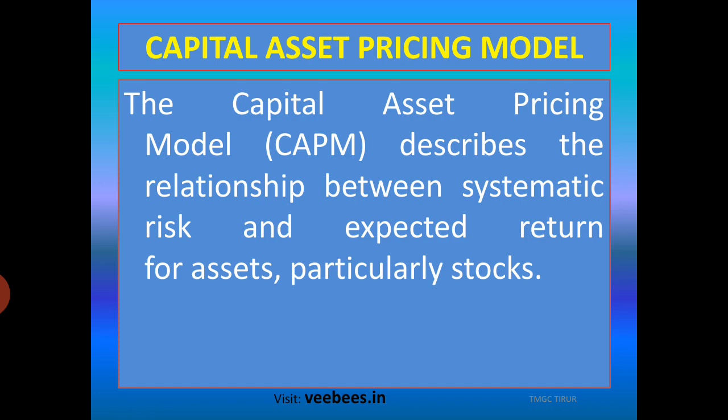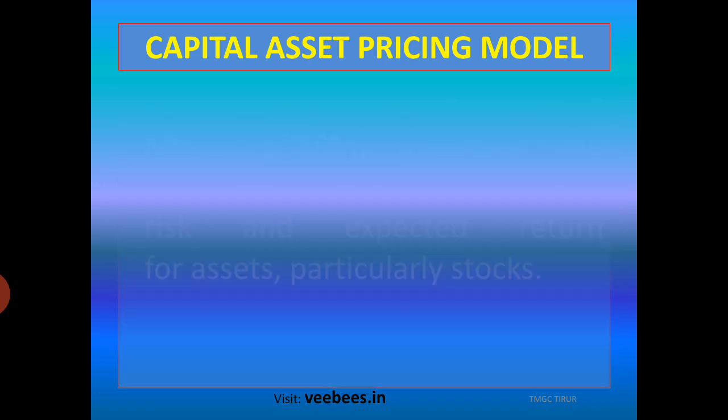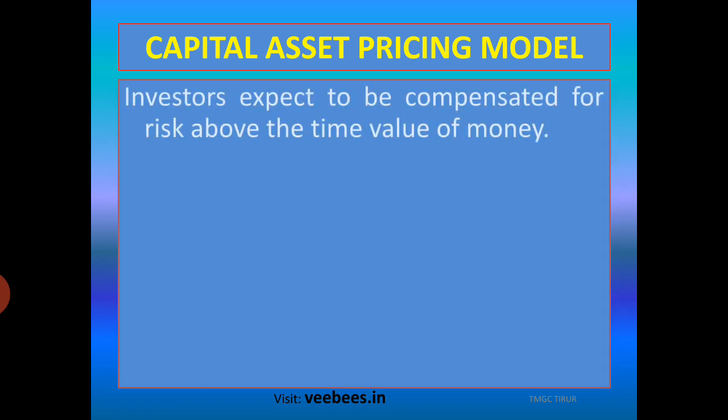The Capital Asset Pricing Model describes the relation between systematic risk and expected return for assets, particularly stocks and market securities — the relationship between expected return and systematic risk. CAPM measures this, and investors expect to be compensated for risk above the time value of money.